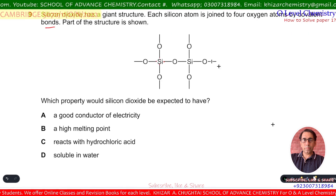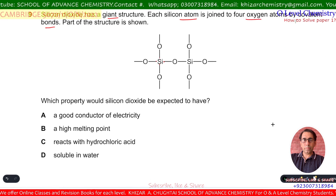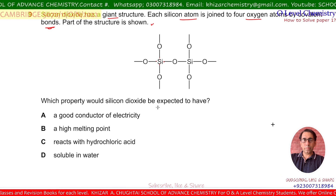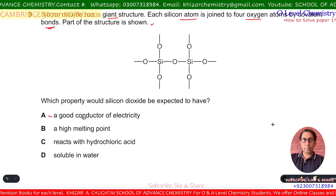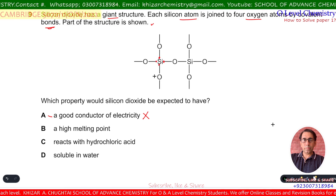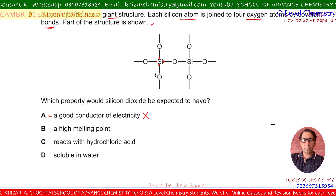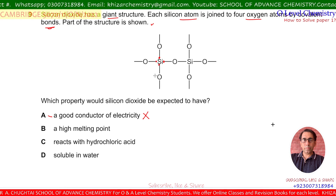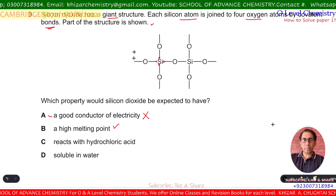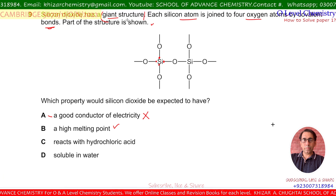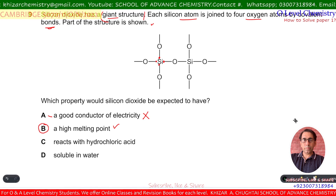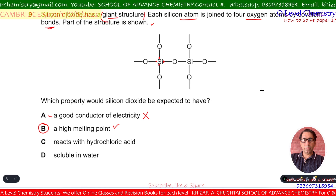Question number 9. Silicon dioxide has a giant structure where each silicon atom is joined to four oxygen atoms by covalent bonds. Option A — good conductor of electricity — is incorrect because all outermost electrons of silicon are used in bonding; none are delocalized or free. Option B — high melting point — is correct because it has a giant structure, which means it has a high melting and boiling point. B is the correct option.